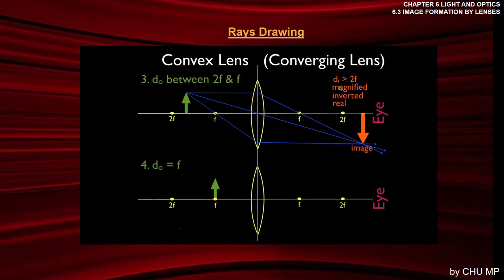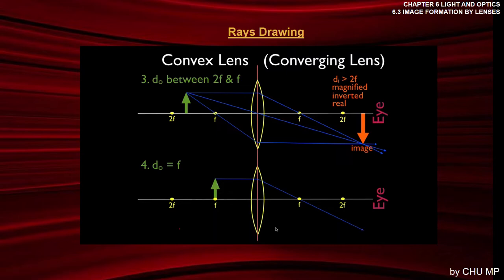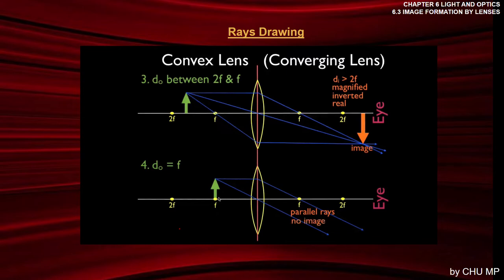Now the object is right at F. We draw the first ray: parallel, then out through F. We can't really use the second ray (F-parallel) because it would go straight down and not through the lens toward our eye, so we ignore it. We draw the third ray straight through the center of the lens. You'll notice these two light rays are parallel — parallel light rays don't intersect. In all previous cases the image occurred where rays intersected, so with no intersection there is no image when the object is at F.